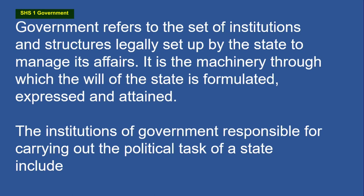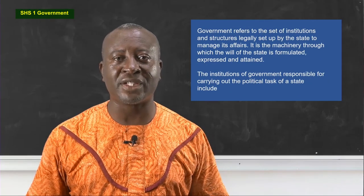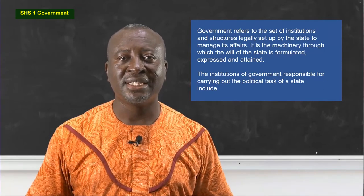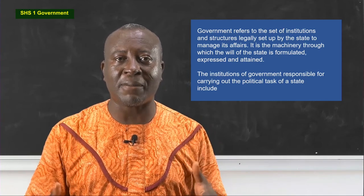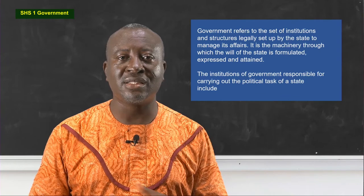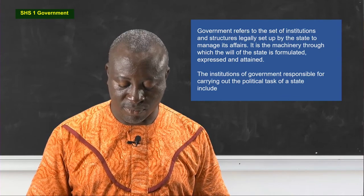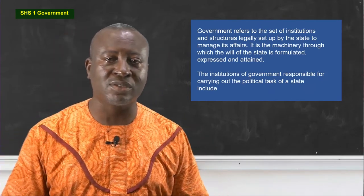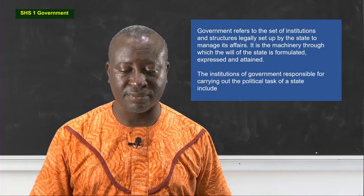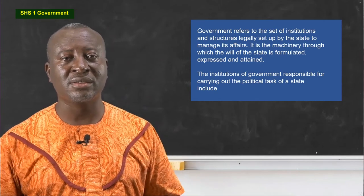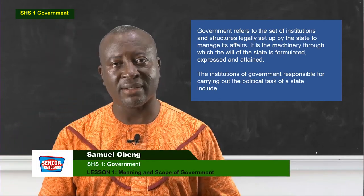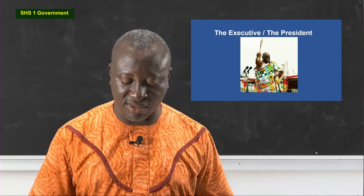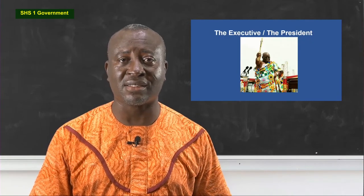We have the Commission for Human Rights and Administrative Justice, the Domestic Violence and Victim Support Unit, the police, and the army. They are all institutions set up by the state to manage the state. The institutions of government are responsible for carrying out the political tasks of a state, and we have various institutions in a state, though here we are limiting ourselves to the political task.